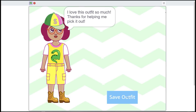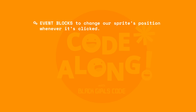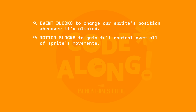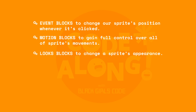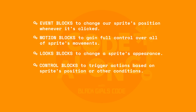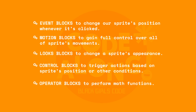Let's take a moment to celebrate everything we accomplished today. We used Event blocks to make things happen, like changing a Sprite's position when it's clicked. We used Motion blocks to set and access a Sprite's current position, giving us full control over its movements. We used Looks blocks to update a Sprite's appearance by switching costumes, adding style and personality to our projects. We used Control blocks to make decisions in our code, triggering actions based on a Sprite's position or other conditions. And we used Operator blocks to perform math functions, opening up endless possibilities for logic and creativity in our projects.